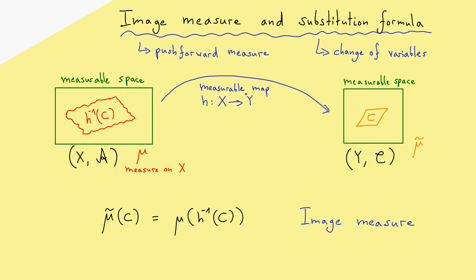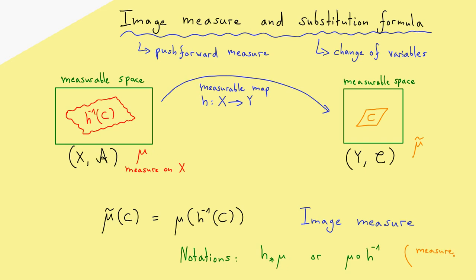This map pushes the measure forward to the right, and therefore this new measure is also called the push forward measure. Because the map h is an essential ingredient, we shouldn't use such a simple notation like mu tilde. Better notations are, for example, h with a star followed by the measure mu, written as h★mu. Or you just write mu composed with h inverse. With this notation you may see the definition immediately. Always keep in mind that what we get out is a measure on the right hand side, so a measure on Y.